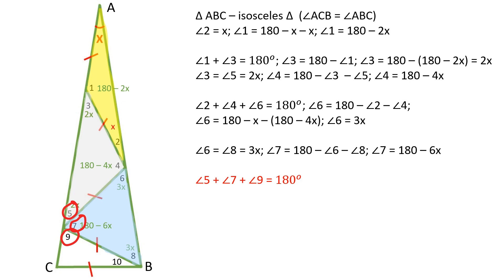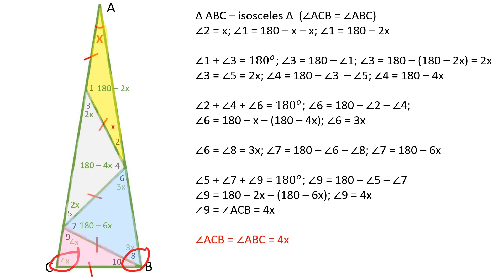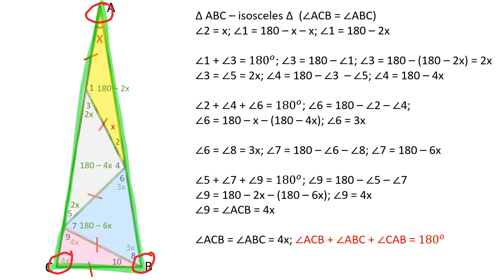The sum of angle 5, angle 7, and angle 9 gives us angle 7 equal to 4X. Angle 8 is equal to 5X. Angle 9 is equal to 180 minus angle 7 and minus angle 8. From there we can calculate X.